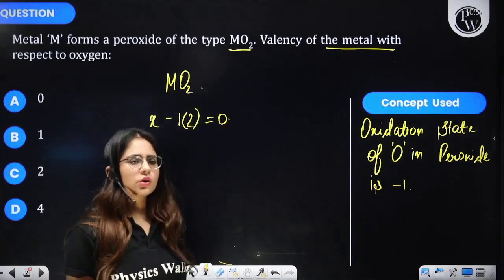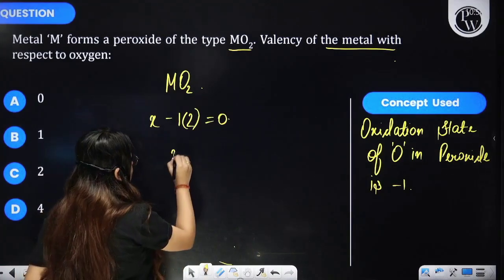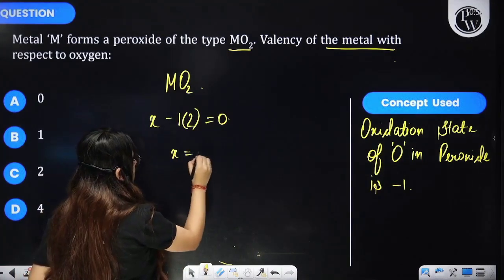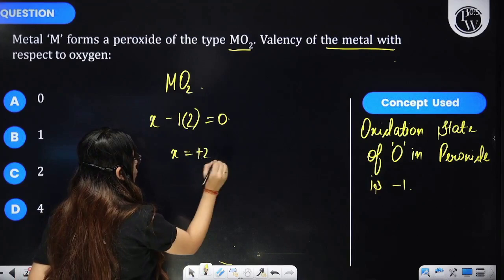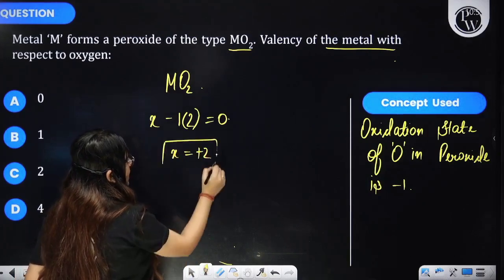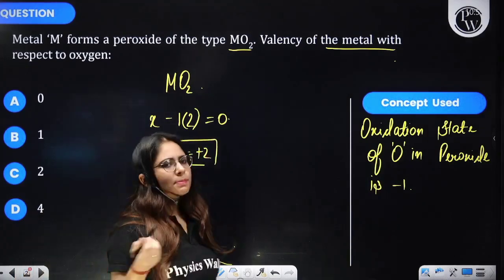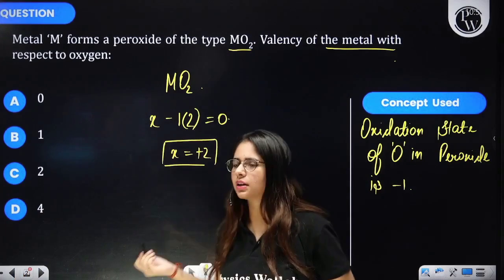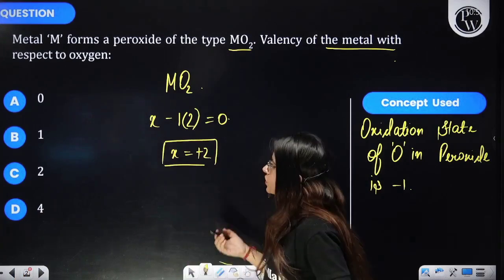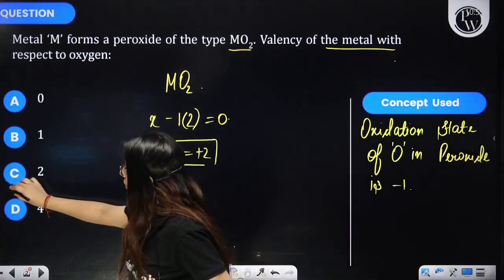On solving, you will get the value of x as plus 2. That means the oxidation state of the metal in this metal peroxide is plus 2. Therefore, option C is correct.